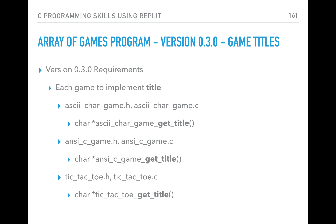For version 3, we'll display the game titles — actually implementing that code. The functions will be prefixed by the game name, and the suffix will be get_title, so we can retrieve the title for each game.